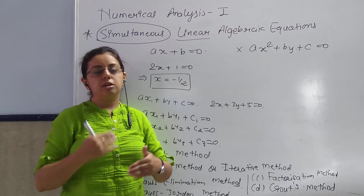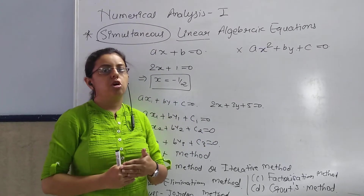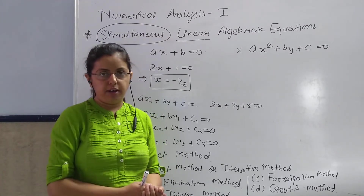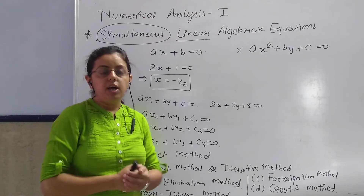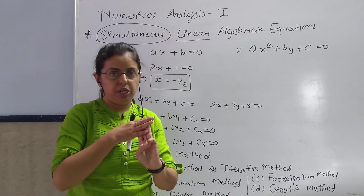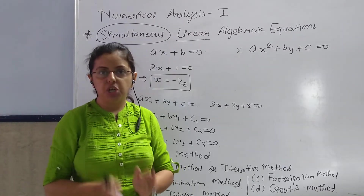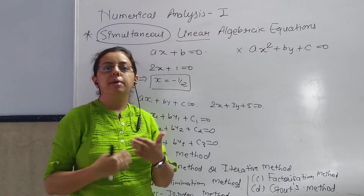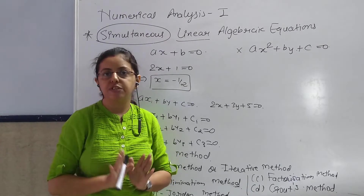First of all, you have to write this system in matrix form, and then apply elementary transformations on it. Elementary transformation means mainly three things. First: interchange any two rows or any two columns. When you write the system in matrix form, you interchange any two rows or two columns — that is an elementary transformation.